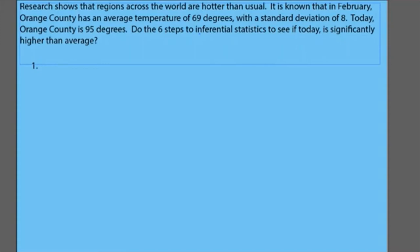So now I've changed something a little more subtle about the question we've been asking. Before we were saying: is temperature different today than average? Now I'm going to reread this to you. Research shows that regions across the world are hotter than usual. It is known that in February, Orange County has an average temperature of 69 degrees with a standard deviation of 8. Today Orange County is 95 degrees. Do the six steps to inferential statistics to see if today is significantly higher than average.